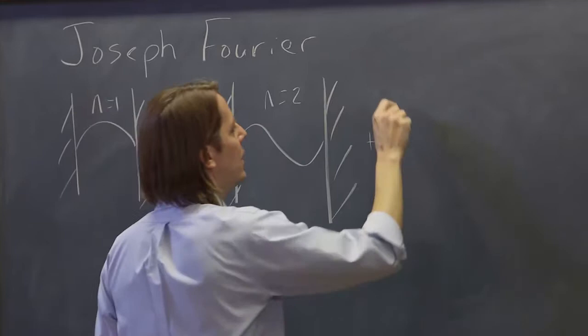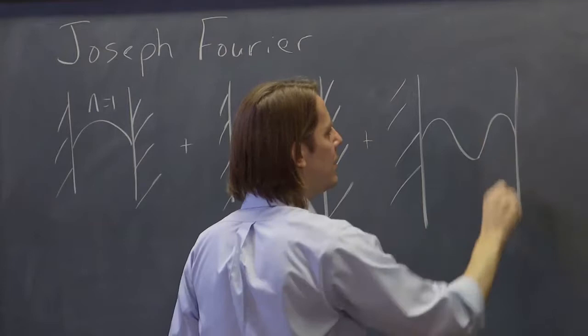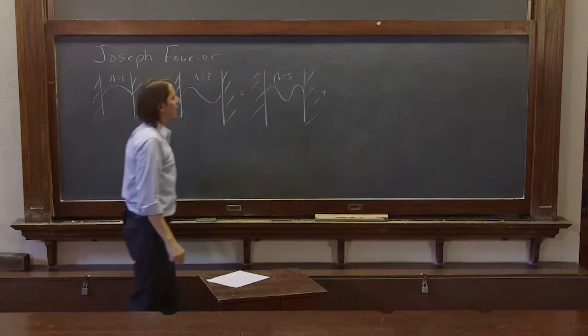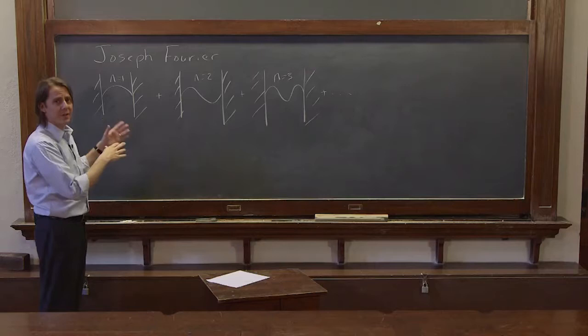That'd be n equals 2, and you could add in a little n equals 3, like that. And maybe give them different amplitudes, maybe leave some out, have them maybe not necessarily in phase with each other.